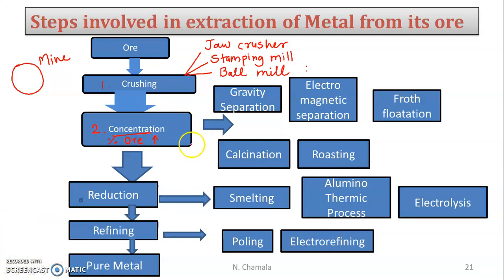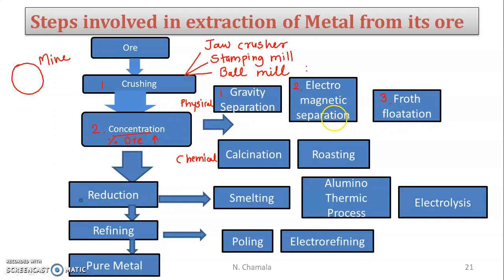Concentration is done by two ways: first by physical method, and second by chemical method. Physical concentration has three types: gravity separation, electromagnetic separation, and froth flotation. Chemical concentration is done by two methods: first calcination, and second roasting.